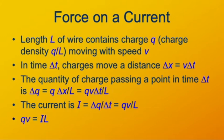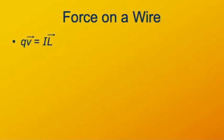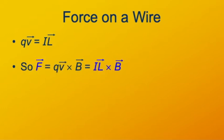So our vector qv from the Lorentz force formula can be replaced by IL — those are the same quantity. So for the force on a wire, qv equals IL, and the force, which is qv cross B, we can just say is IL cross B.